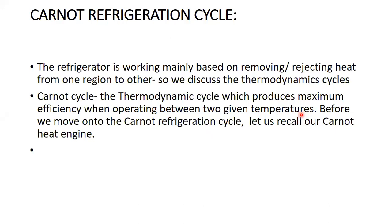For example, our household kitchen refrigerator operates between two given temperatures. One temperature is the temperature inside the freezer compartment or inside chamber of the fridge. The second temperature is the surrounding temperature. Our household refrigerator is a device which absorbs heat from the low temperature region — the freezer compartment — and transfers that heat to a high temperature region.